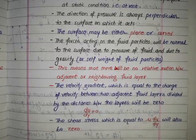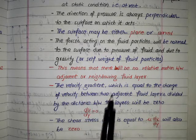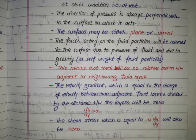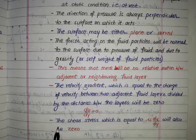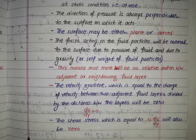So, here on the basis of this description, du upon dy equal to zero. And as we know tau equal to mu du upon dy.